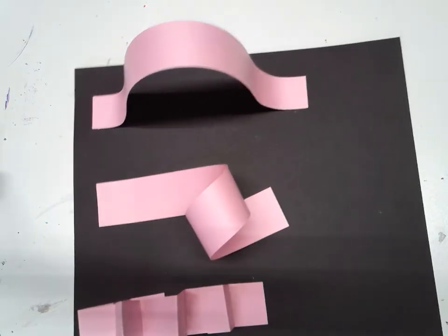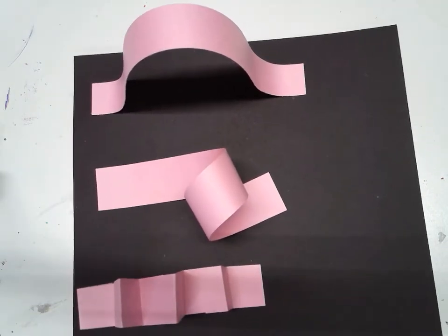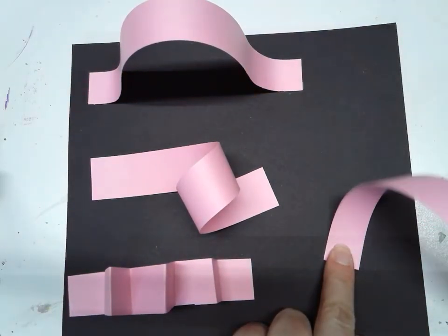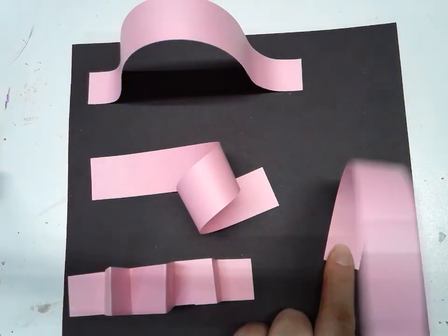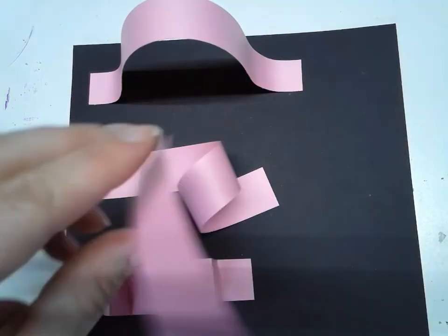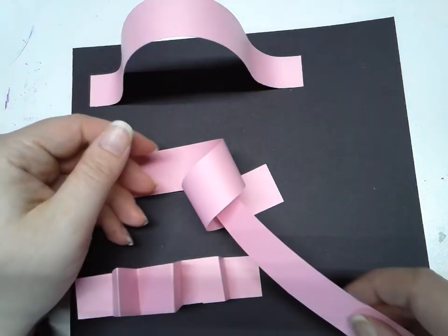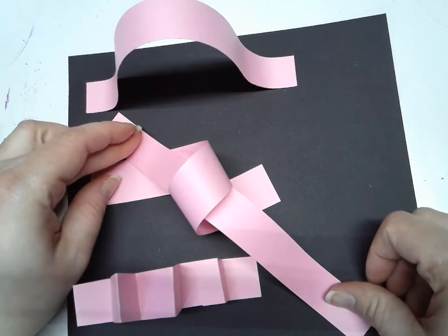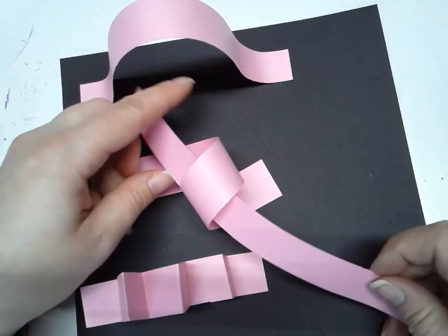Those are some really simple ways to get started. You can also think about different ways you can put the paper down. If you glue one side, figure out where you want to put the other side. Maybe you could come up with some designs of your own. You can also think about how they can go around each other - maybe put one through here and glue it down like that.